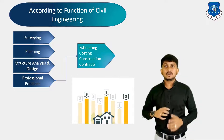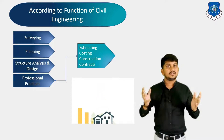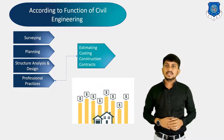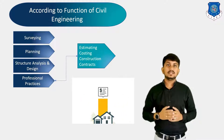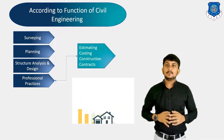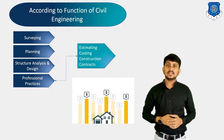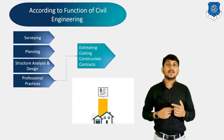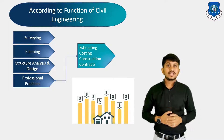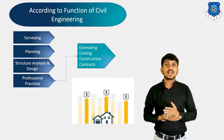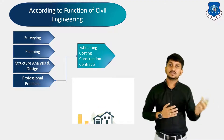Next is professional practices, which includes estimating, costing, construction, and contracts. Estimating is all about data of drawings, specifications, and rates. Costing is to know the actual expenditure in the payment of bills to the contractor and many other expenditures. After estimation and costing, we can start construction by inviting tenders and selecting contractors.